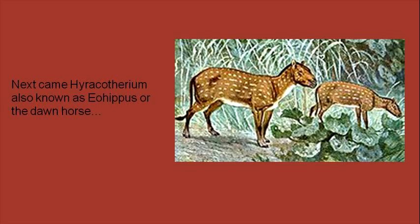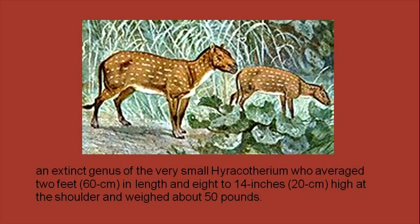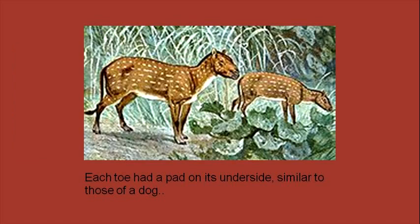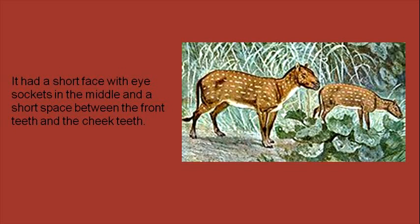They were the first to evolve hoof-like extremities. Next came the Hyracotherium, also known as Eohippus, or the Dawn Horse — an extinct genus of very small equids who averaged 2 feet in length and 8 to 14 inches high at the shoulder, and weighed about 50 pounds. It had four hoof-toes on each front foot and three hoof-toes on each hind foot, each toe having a pad on its underside, similar to those of a dog.